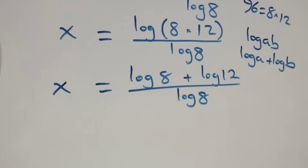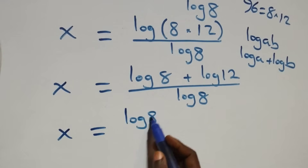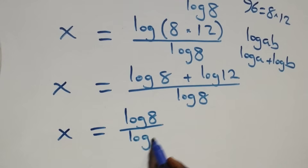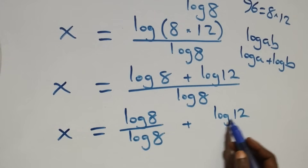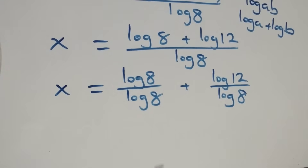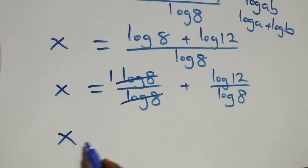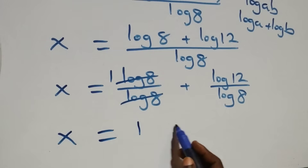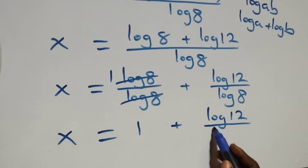We separate this into two fractions: x equals log 8 over log 8 plus log 12 over log 8. Since log 8 over log 8 equals 1, we have x equals 1 plus log 12 over log 8.